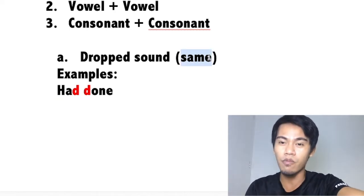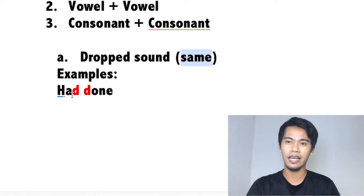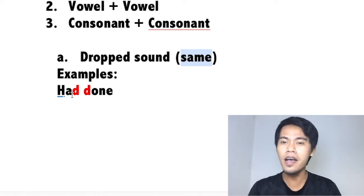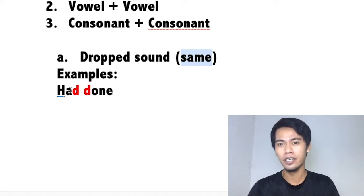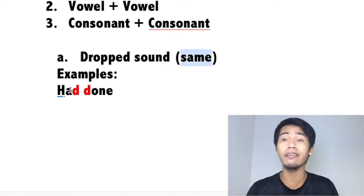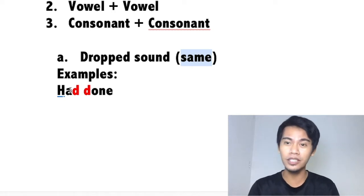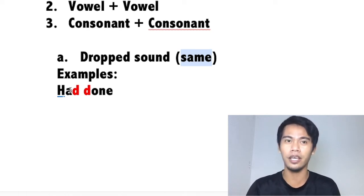Now, if they are the same, what are you going to do? Just drop the first sound. You would say 'had done' like that. You are not going to say 'had done' and double the sound. If they have the same sound, just drop the first or the second sound and blend. Say 'had done.' You do not say 'I had done it' — no. Say 'I done it.'